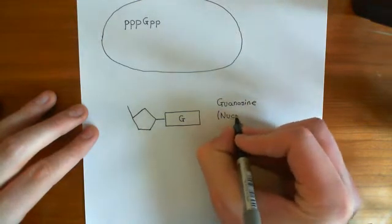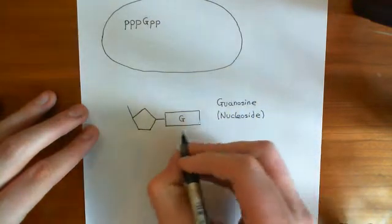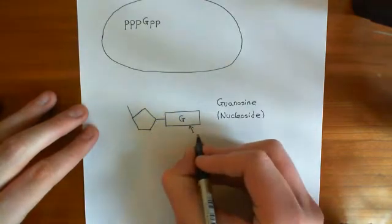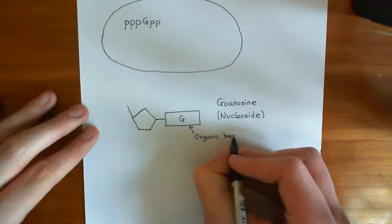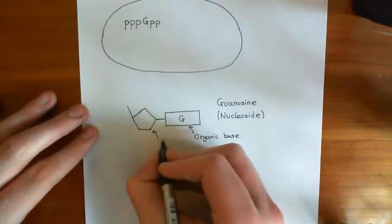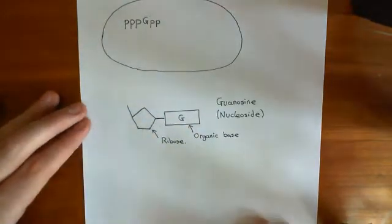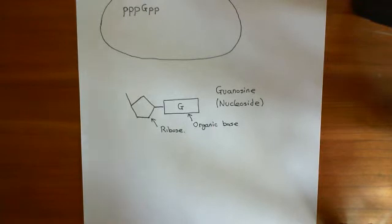I'll explain what the difference between a nucleoside and a nucleotide is. A nucleoside is just an organic base, such as guanine, which is used in DNA, bonded to a ribose sugar. Now, ribose is not the sugar used in DNA — it's the sugar used in RNA. The sugar used in DNA is deoxyribose. So in DNA, you don't have nucleotides or nucleosides; you have deoxynucleosides and deoxynucleotides, because it's got deoxyribose rather than normal ribose.